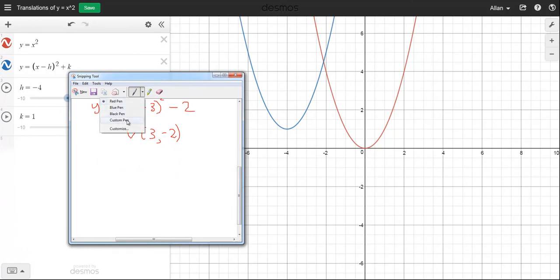And let's use the color black here. So now, h is negative four. So this would be x minus negative four. So this is going to be x plus four in here. And k is one, so plus one on the end.